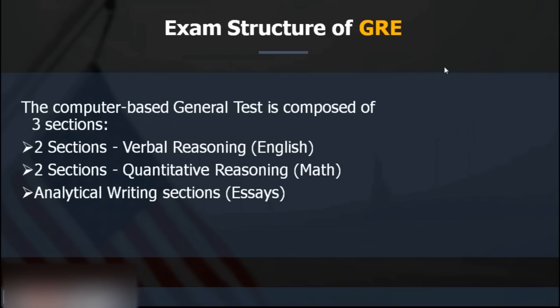The GRE exam structure is simple: two sections of verbal reasoning, two sections of quant reasoning, and one analytical writing section. The AWA essay writing section is very important — it decides what kind of universities you'll get into. It may not seem as important, but it decides a lot, especially for competitive fields like computer engineering, computer science, MIS, and data science. Give equal concentration to AWA as you do to quant and verbal.